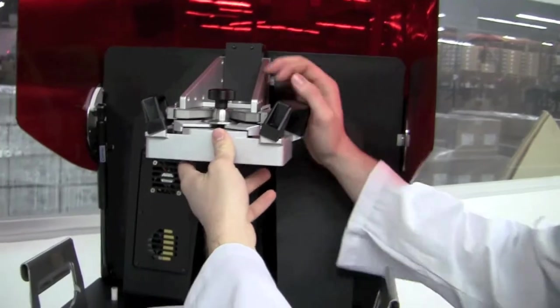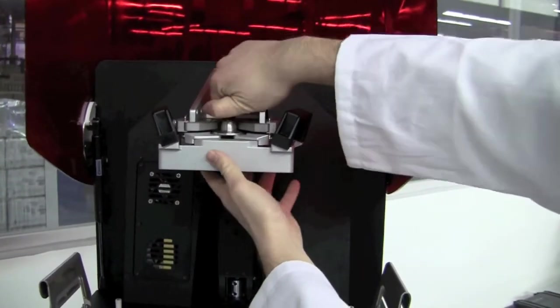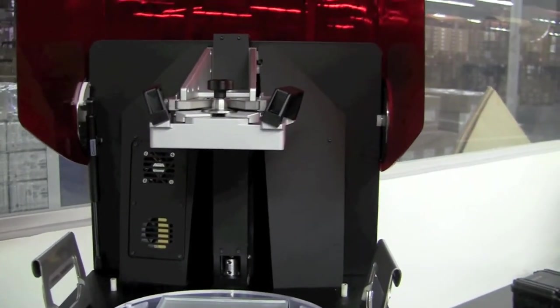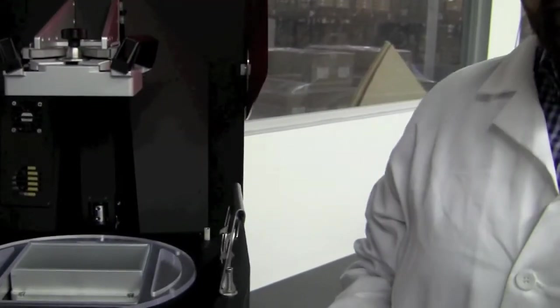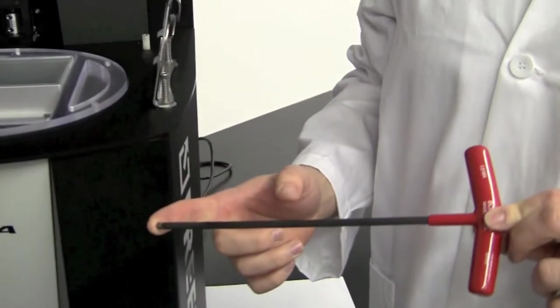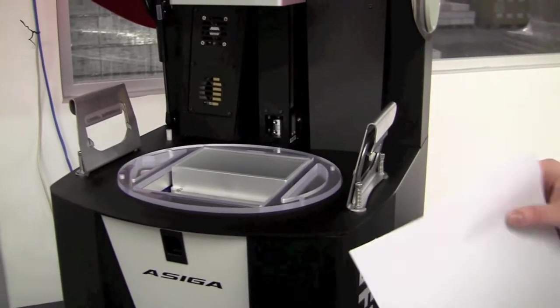Before loosening the screw, make sure your build plate is secured into its position. For this process, we're going to use a 5mm T-handle screwdriver that is included with the 3D printer, and we will use a simple sheet of copy paper as a shim.